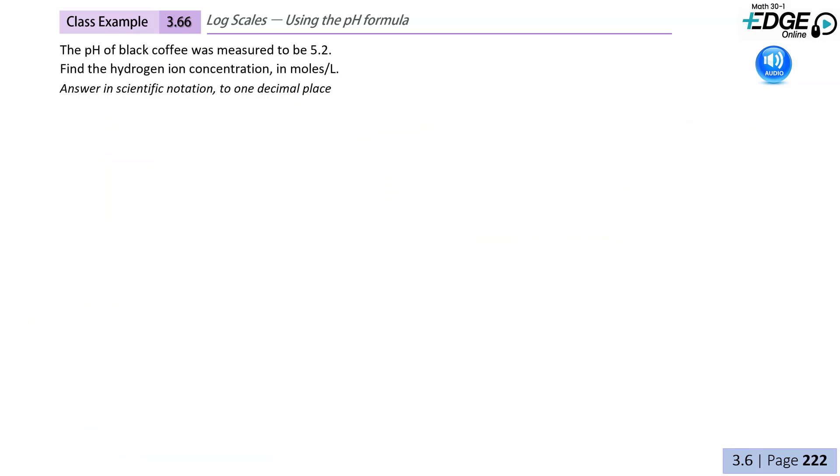Class example 3.66: The pH of black coffee was measured to be 5.2. Find the hydrogen ion concentration in moles per liter, and answer in scientific notation to one decimal place. Starting with our equation for pH, we will replace our pH value with the known value of 5.2.